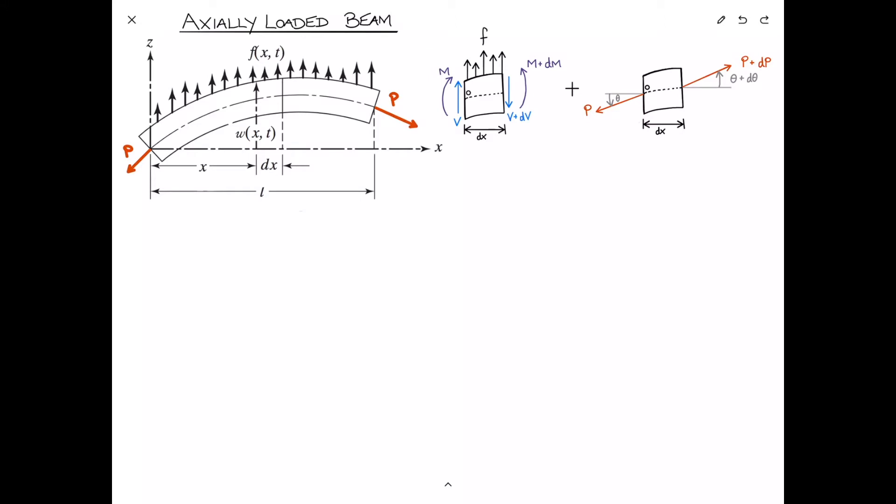We proceed as always with Newton's second law for the differential element in the Z direction, the transverse direction. Fundamentally we've got to sum up the forces and set it equal to MA. Looking at this element, we can see that we've got V in the vertical direction upwards and V plus dV downwards, so it's V minus V plus dV, plus the force due to the distributed load F, which is F times dx.